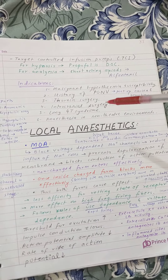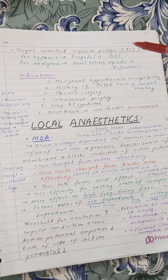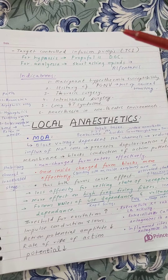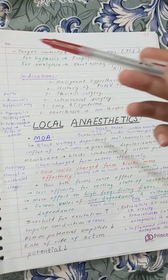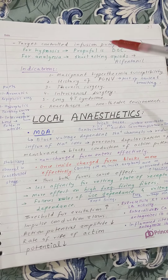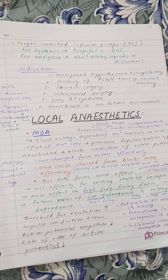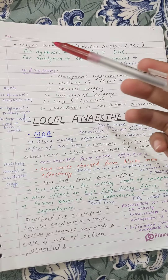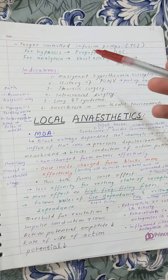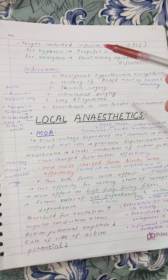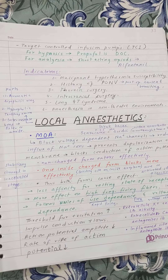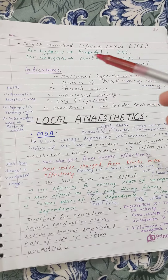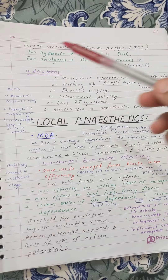In non-theater settings, we mostly give IV routes. This is called Target Controlled Infusion pump, or TCI. We provide IV anesthesia at a target concentration to maintain blood levels, and the infusion pump regulates that by adjusting the dose. For IV anesthesia, the drug of choice for hypnosis is propofol, and for analgesia we use short-acting opioids like fentanyl.